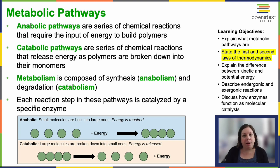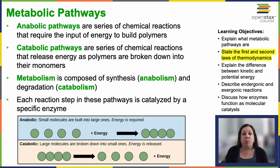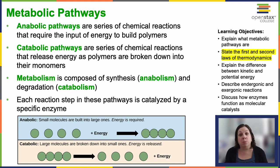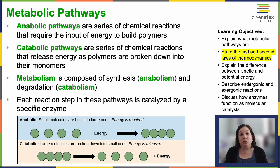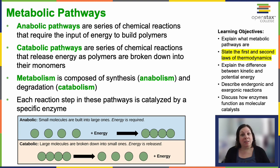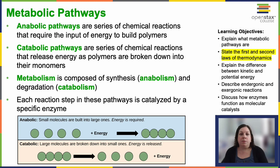Sugar metabolism includes anabolic pathways, which involve constructing larger molecules — it might help to think of anabolic steroids helping you build bigger muscles; anabolic pathways are building things. Then catabolic pathways are breaking down large molecules into smaller ones — you can think of 'cat' like 'cut.' When you build things, you need energy put in; when you're breaking things apart, you're releasing energy. So anabolic means synthesis, building something new, and catabolic means degradation, breaking it down. All of these come together to form the metabolism of sugar.